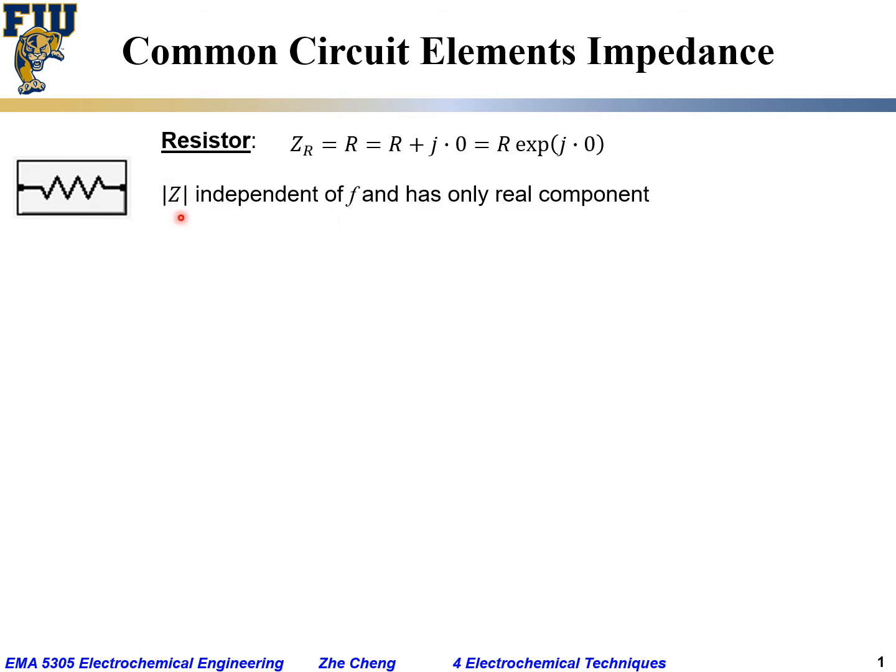the modulus, the impedance modulus for the resistor, would be independent of frequency - it does not depend on frequency or radio frequency. And impedance Z has only a real component. And the phi, the phase, would be zero, which means between the voltage and the current they are always in the same phase - they're in phase with each other. There's no phase shift between the current and the voltage.